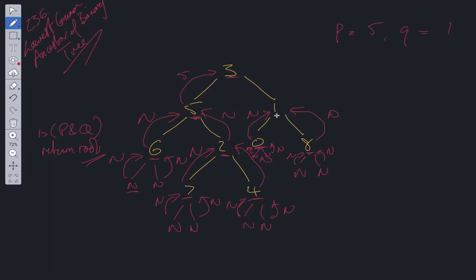Now we can check 1. Is P and Q present? No. At 1, we check whether that's equal to P or Q. It is. So here we can return 1.